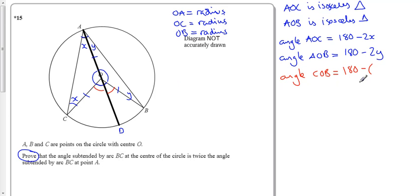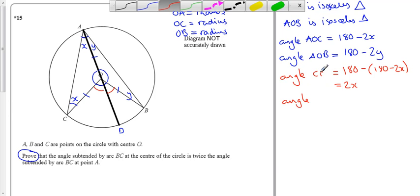That was 180 minus 2X. So 180 minus 180 is 0, minus a minus just makes it 2X. And by the same process on the other side, oh it wasn't COB, my apologies, it was COD. COD is 2X.